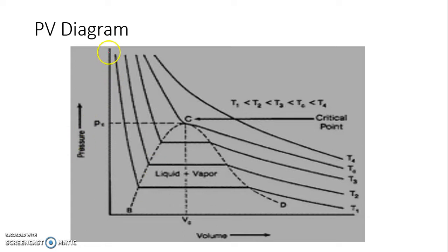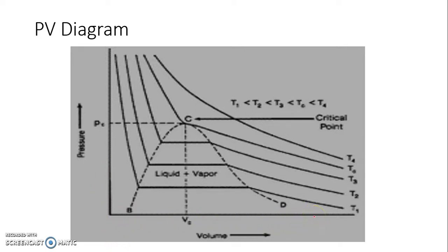The diagram is plotted for pressure as a function of volume — in other words, we vary the pressure and observe the volume of the fluid under consideration. Temperature is a parameter, so all these lines correspond to a specific temperature, which is why they are called isotherms — because we keep temperature constant.